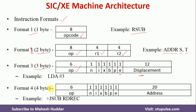Coming back to format 4: there is only one change — after the flag bits, we have 20 bits for the address, whereas in format 3 we had only 12 bits. That is the only difference. Format 4 instructions are represented with a plus sign so we can easily identify them. However, the machine determines the format based on the value of E: if E is 0, it is format 3; if E is 1, it is format 4.